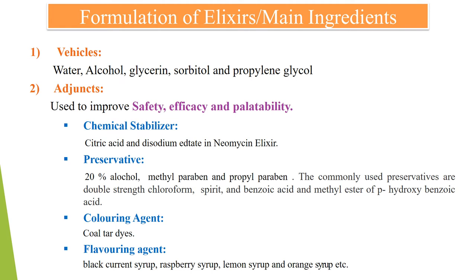Now let us look at the different formulation ingredients of elixirs. Firstly, vehicles — also called solvents — are used. Various types of solvents are used: water, alcohol, glycerin, sorbitol, and propylene glycol are the main ingredients used as vehicles.